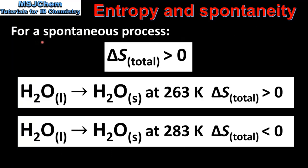To summarize: for a spontaneous process the total change in entropy must be greater than zero. For the freezing of water at 263 K the total change in entropy is greater than zero, meaning it is spontaneous at this temperature. For the same process at 283 K the total change in entropy is less than zero, meaning it is non-spontaneous at this temperature.